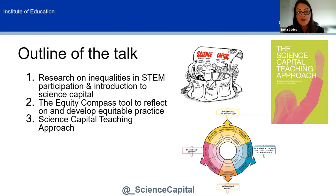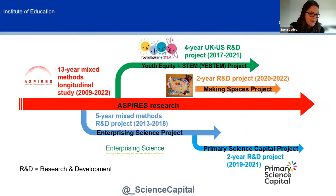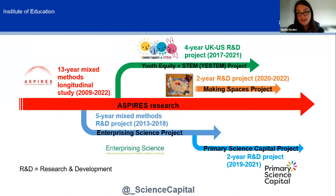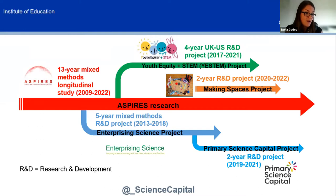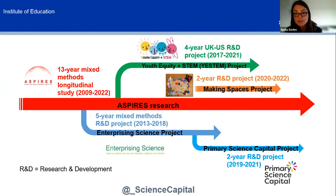I want to quickly show some of the projects I'll be drawing on. For the background, I'll draw on the now 13-year Aspire study, led by Professor Louise Archer. The Aspire project looked at young people's aspirations in relation to science — what they are, how they develop, and what influences them. The science capital teaching approach was developed as part of two research and development projects: Enterprising Science and the Extending Primary Science Capital project, where we worked with over 60 teachers in co-producing the approach. The Compass was developed in the Youth Equity and STEM project, which works with informal STEM learning educators in the UK and in the US.